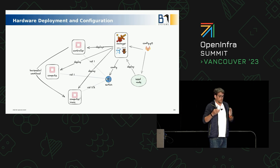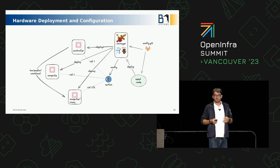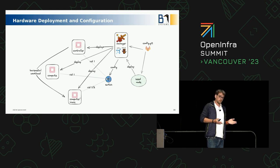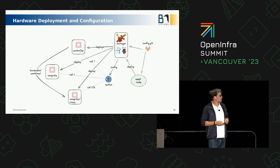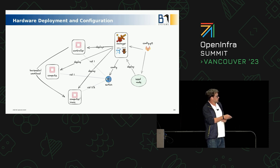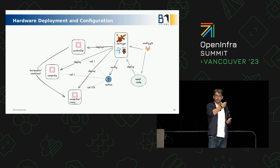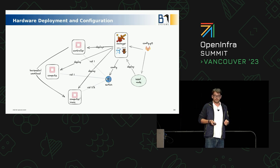Once the OS is installed, the last step is of course to call the Ansible rollout for all the OpenStack services. After that, we are able to start workloads on Ironic — for example, bare metal workloads for an Ironic node — or on an instance.